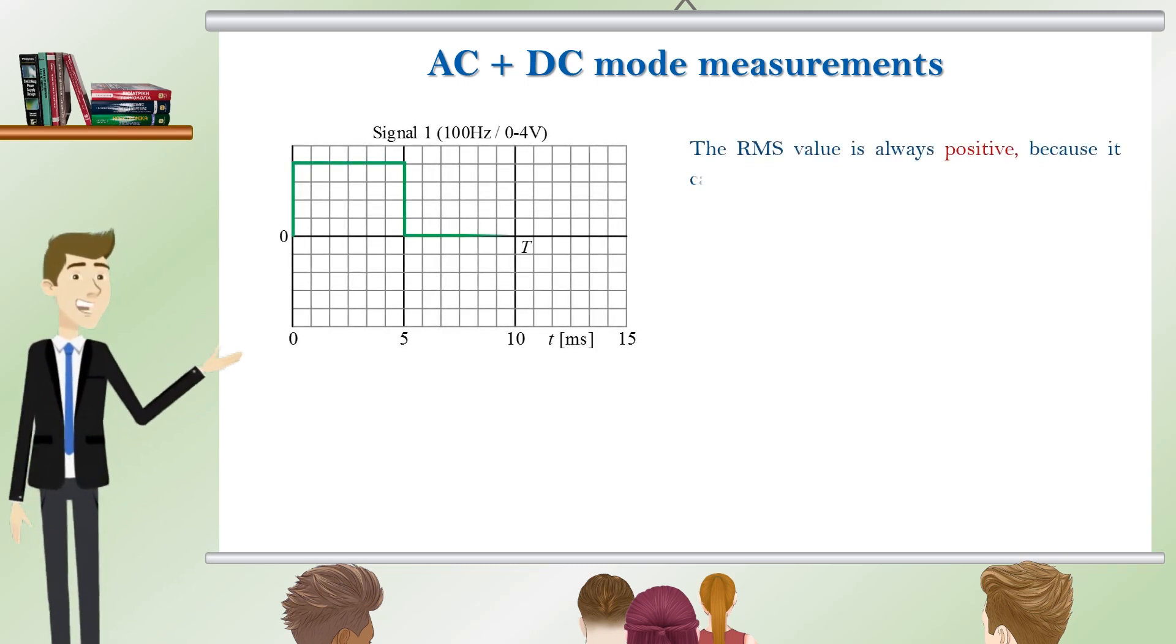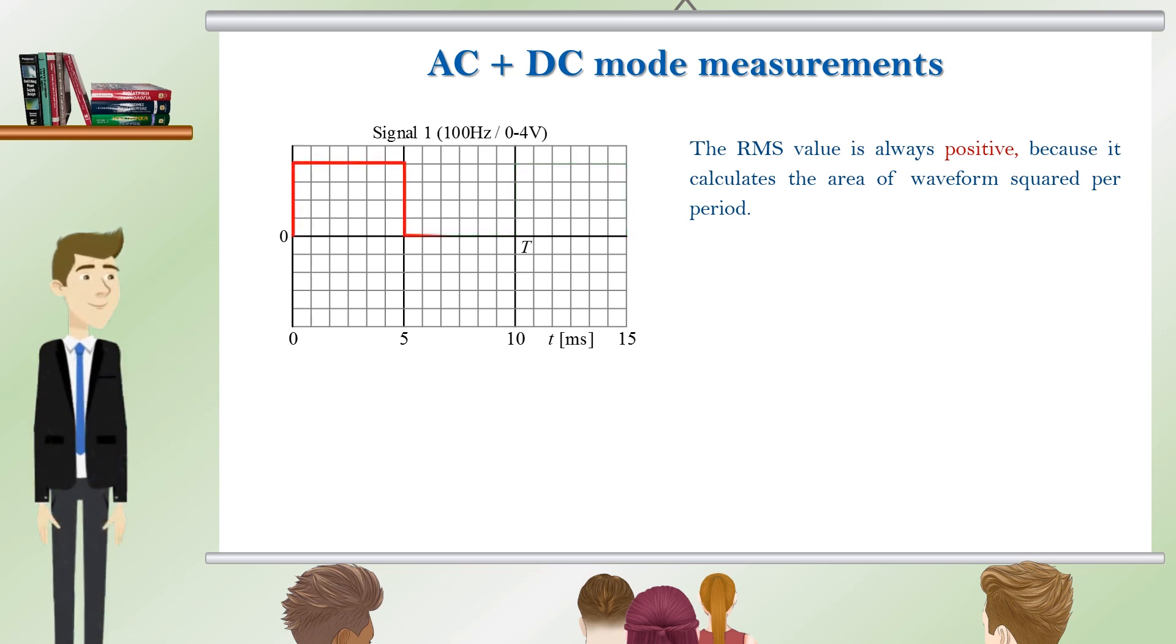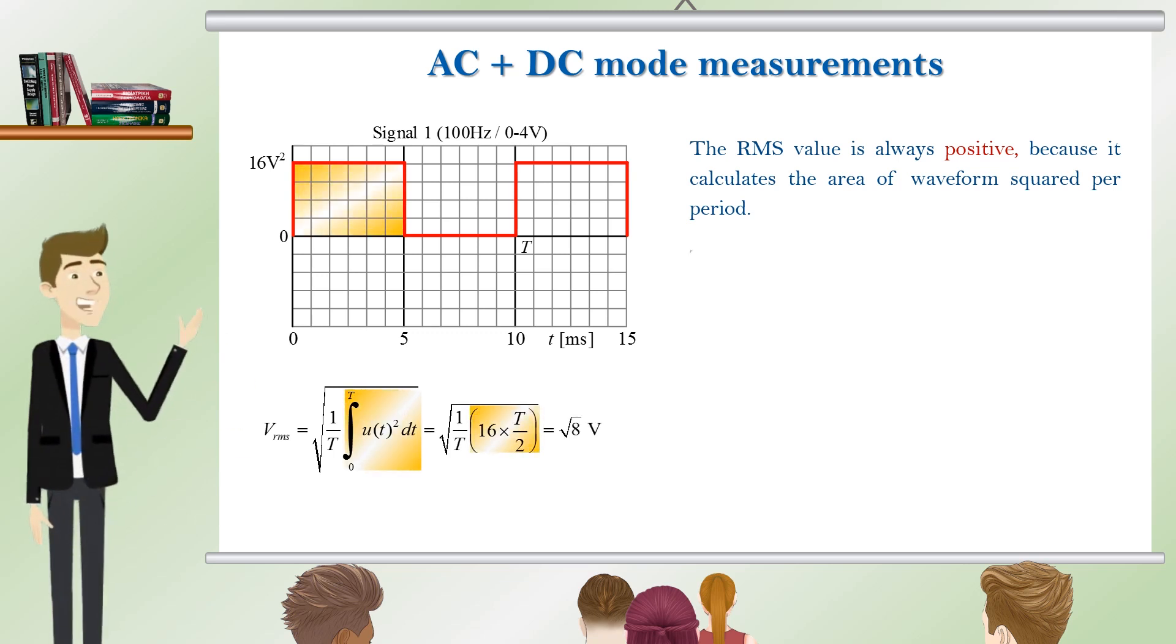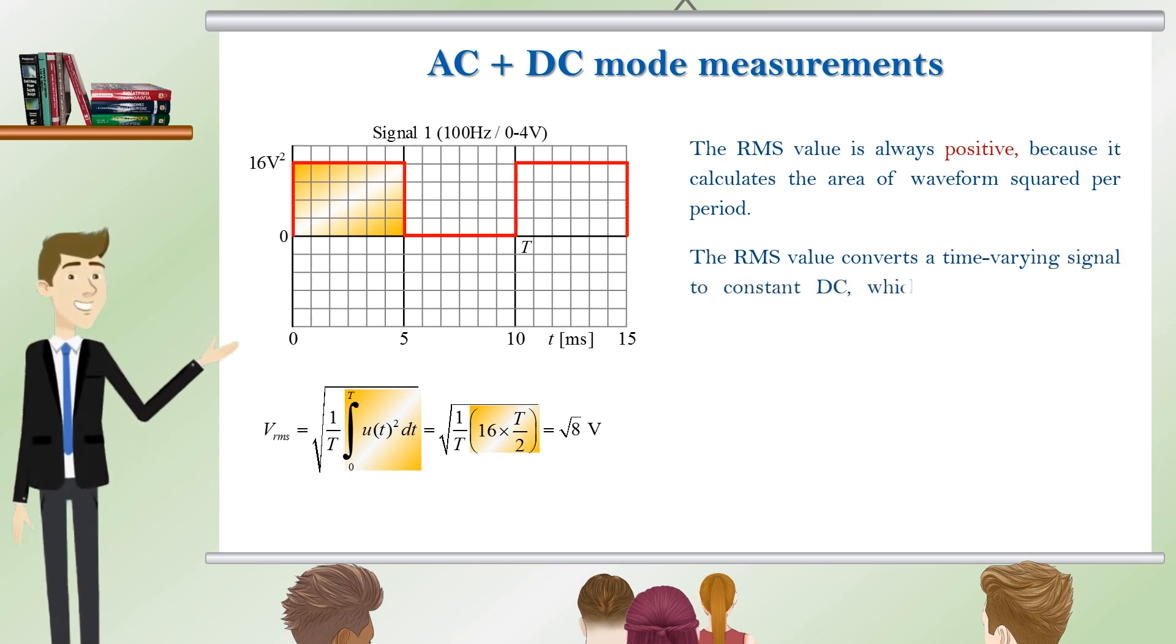The RMS value is always positive because it calculates the area of waveform squared per period. The RMS value converts a time varying signal to constant DC which produces the same power dissipation in a resistor.